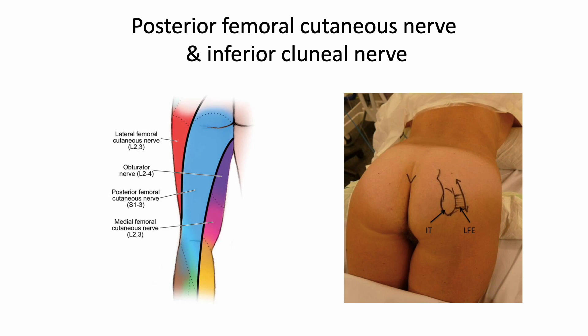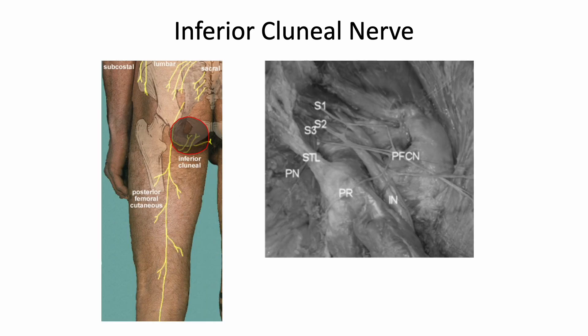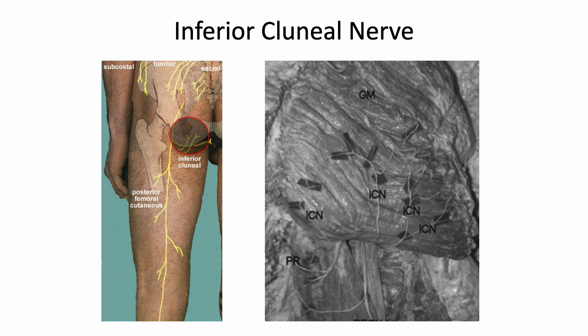The ischial tuberosity is the landmark for targeting the nerve. The posterior femoral cutaneous nerve gives rise medially to the inferior cluneal nerves, which course below the inferior border of the gluteus maximus muscle and enter the skin of the buttock, providing sensory innervation to this region. The perineal branch generally arises from the medial border of the posterior femoral cutaneous nerve on the lateral aspect of the ischial tuberosity. It then courses subcutaneously over the origins of the hamstring muscles, transversely crossing over the tendon lateral to medially, and innervates the lateral anal, scrotal, or labial skin.